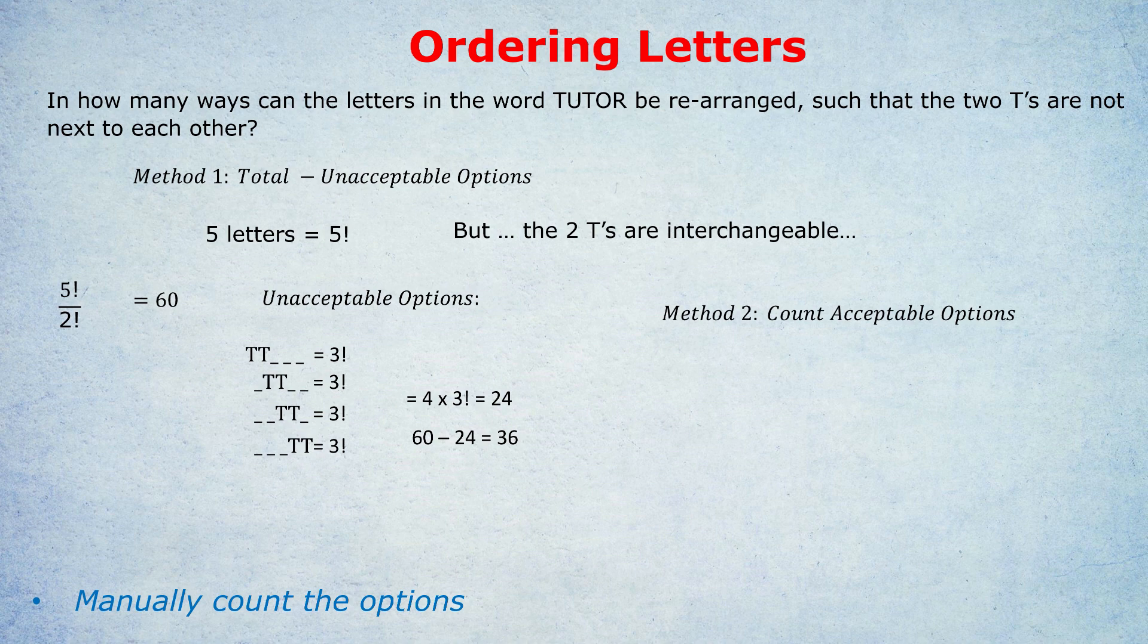What's the first acceptable arrangement with T in position one and another T in position three? That's acceptable because the two T's are not next to each other. Why three factorial? Again, because we have three blanks, the U, O and R, and they could be in three factorial arrangements. What's the second acceptable option? The two T's in position one and four. Notice that we keep the first T in position one and gradually move the second T along. Don't just randomly pick options. Be systematic. That's really important.